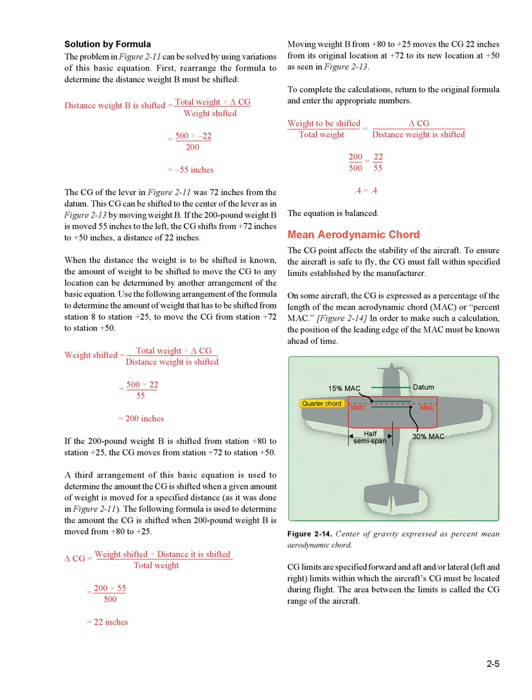To complete the calculations, return to the original formula and enter the appropriate numbers — the equation is balanced. Mean Aerodynamic Chord: the CG point affects the stability of the aircraft. To ensure the aircraft is safe to fly, the CG must fall within specified limits established by the manufacturer. On some aircraft, the CG is expressed as a percentage of the length of the mean aerodynamic chord, MAC, or percent MAC.